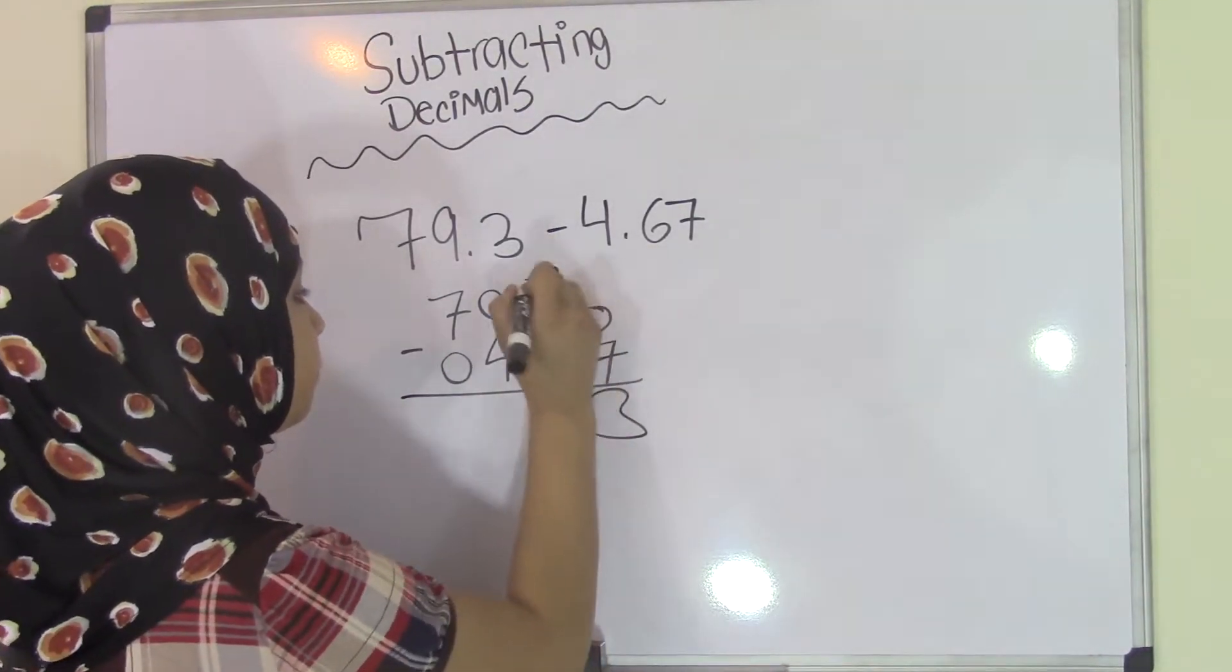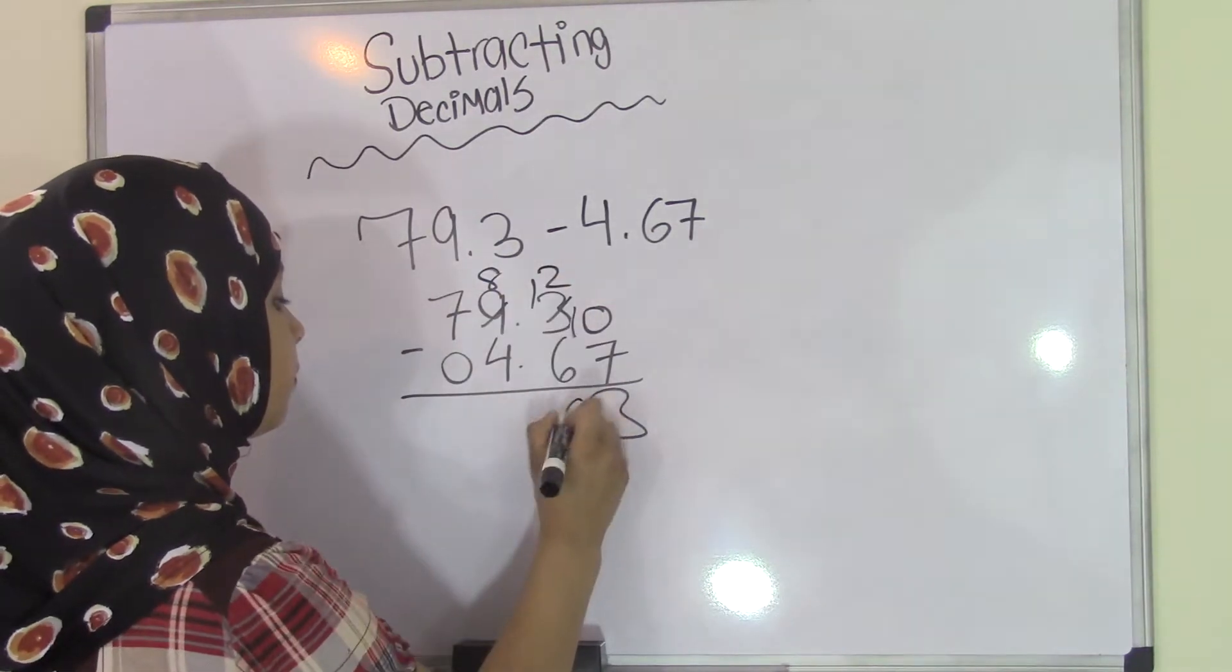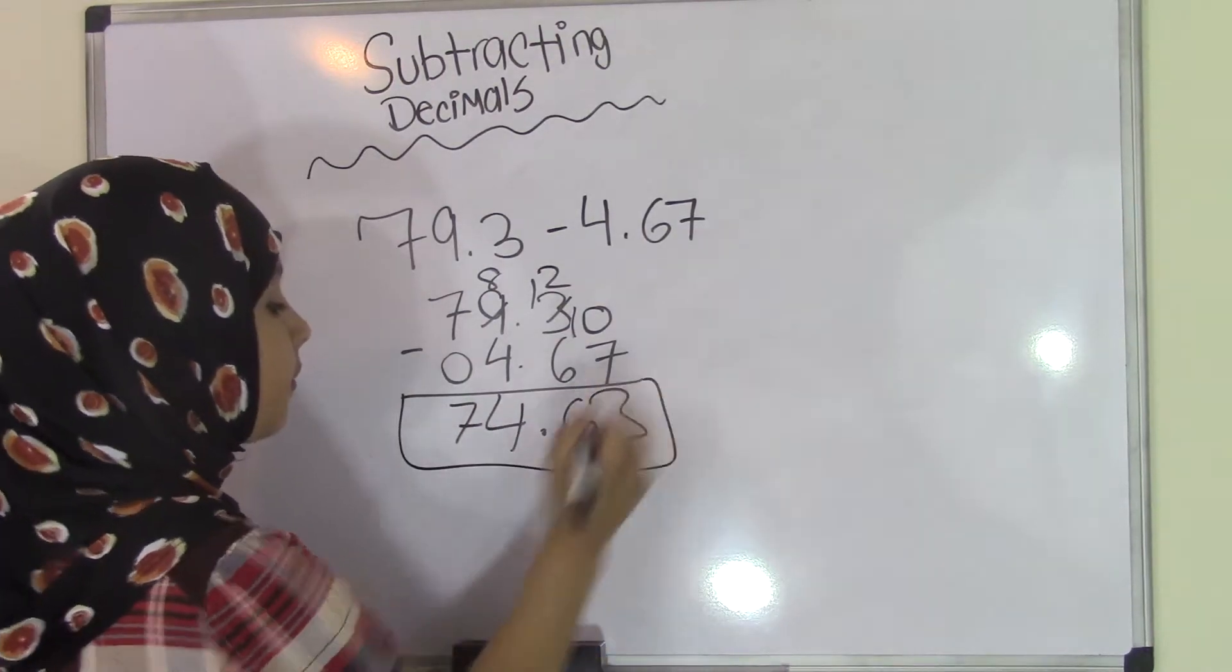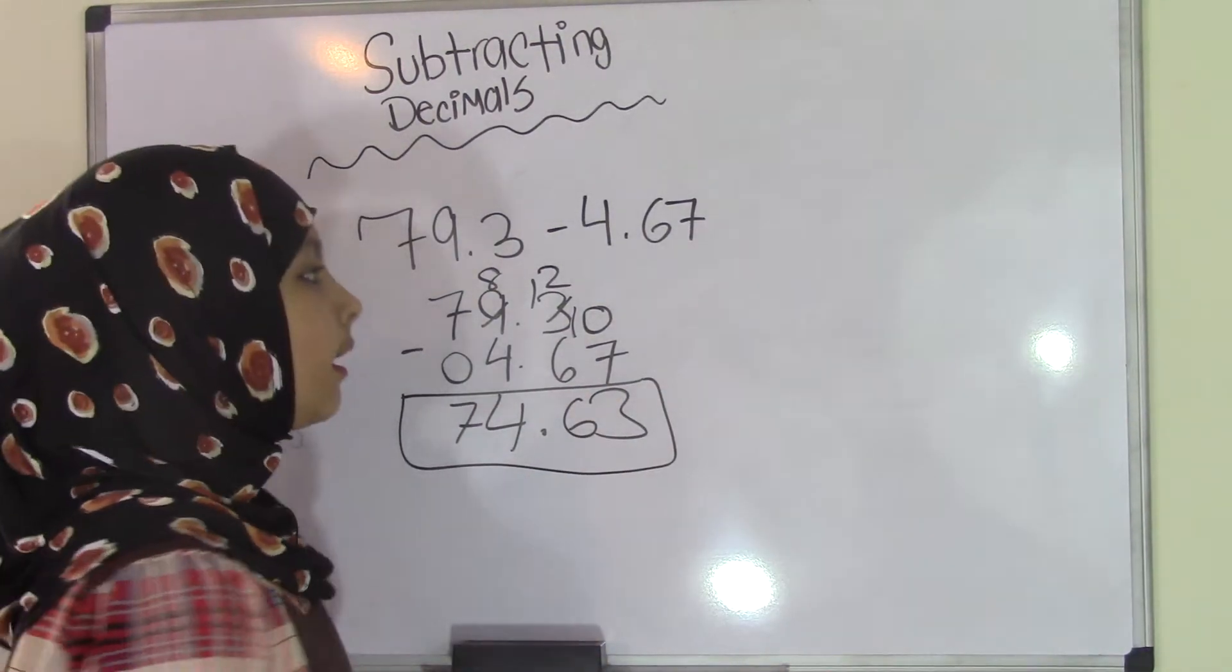So, you'll bring down the decimal point and you will get a difference of 74.63.